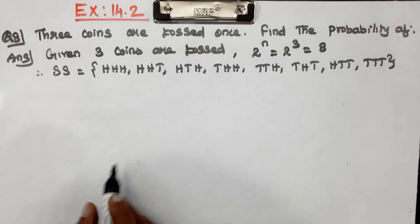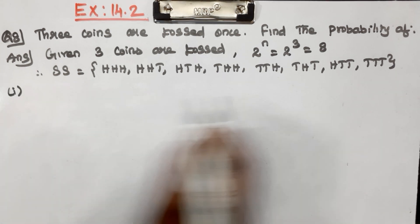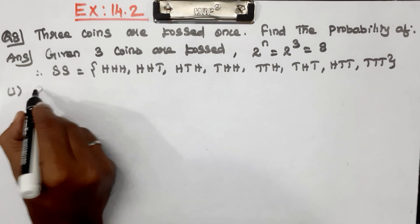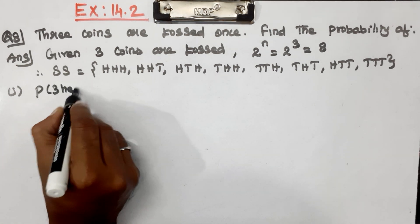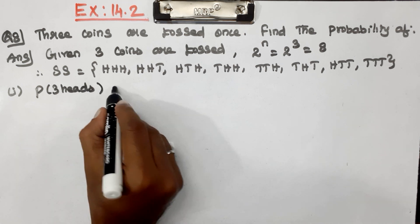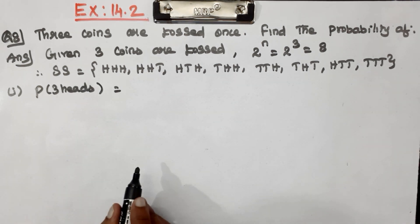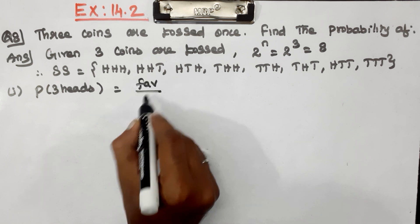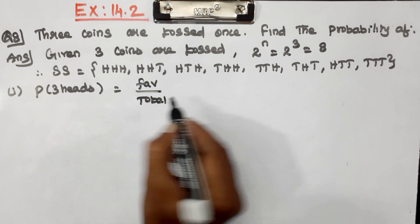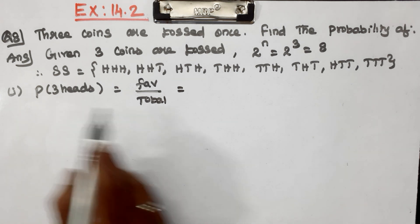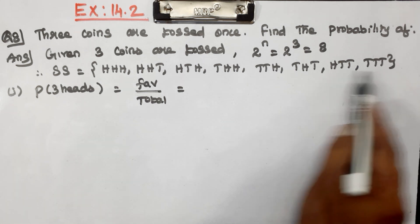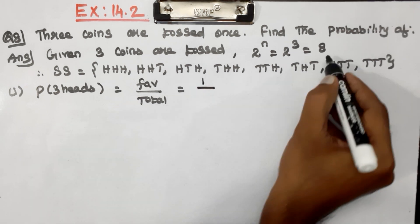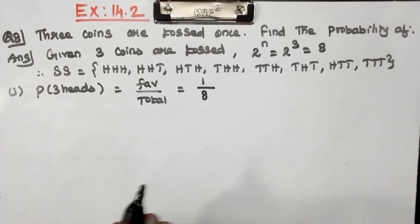Question number 1: Probability of 3 heads. The formula is favorable outcome divided by total outcome. For 3 heads, the favorable outcome is 1, divided by total outcome 8. So the answer is 1 by 8.